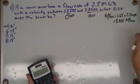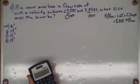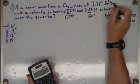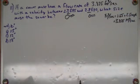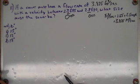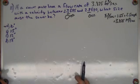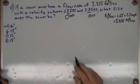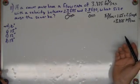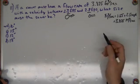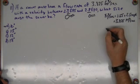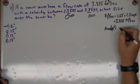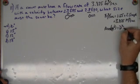So the problem now reads: a sewer must have a flow rate of 3.875 cubic feet per second with a velocity between 2.3 and 2.8 feet per second. I'm going to start with the maximum velocity of 2.8 feet per second for the minimum pipe size. I need the area formula: Area (ft²) = diameter² × 0.785.